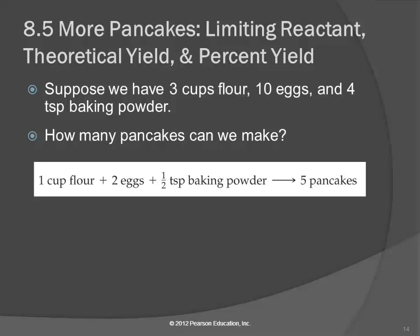This is 8.5, and we're back to talking about pancakes. This time we're going to talk about limiting reactants, theoretical yields, and percent yields.